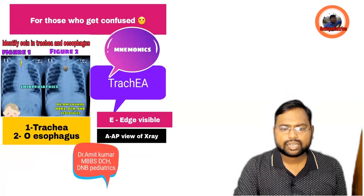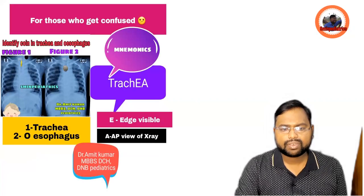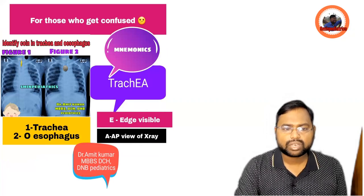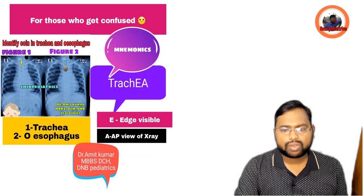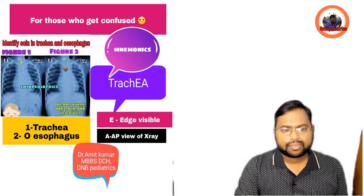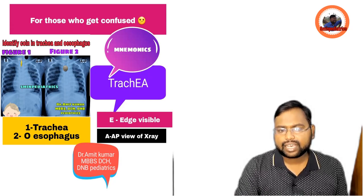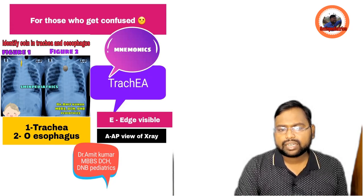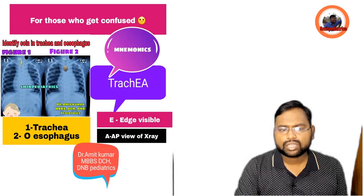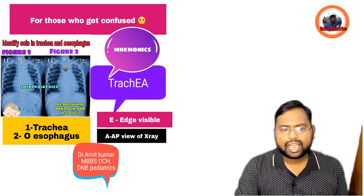First of all, you have to go for an AP view chest X-ray. If you see a total 'O' — a complete circle — then the coin is in the esophagus. If it is in the trachea, you can see only an arc. Think of the word 'trachea' — it ends in 'E' and 'A'. So if you get an arc shape in the AP view, think of it as being in the trachea.